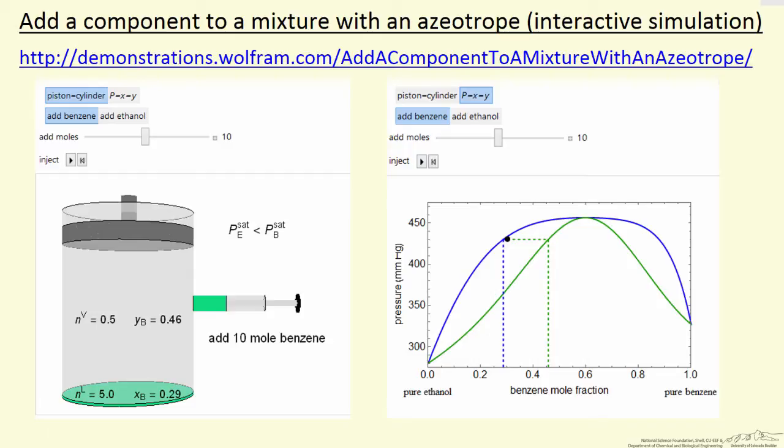And we're told the saturation pressure of benzene is greater than the saturation pressure of ethanol. The question is what is the final condition of the system. And to use this we can click this play button here, it'll show the benzene being added, and it'll go to final equilibrium conditions.